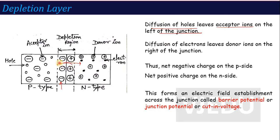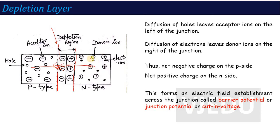Similarly, electrons move into the p-type and recombine, leaving behind positive donor ions on the n-side. This creates a complete positive charge on the n-type side and a complete negative charge on the p-type side, which generates an electric field potential. This barrier prevents further recombination — further electrons will not move from n-type and further holes will not move from p-type.